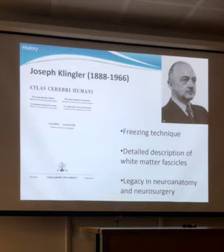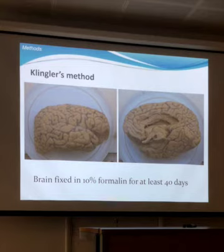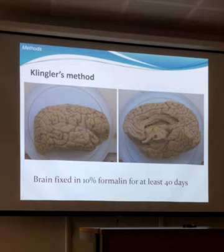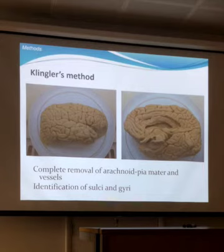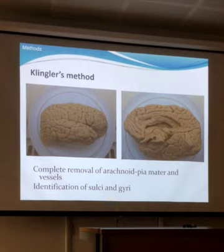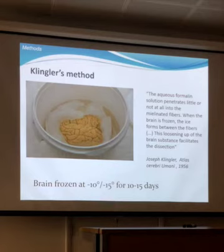How does the Klingler method work in practice? The first step — using specimens prepared in Newcastle where I did my PhD — is fixing the brain in a 10% formalin solution for a minimum of 40 days, though I usually keep them 2 to 3 months. The second step is to completely remove the arachnoid and pia mater along with all vessels, allowing identification of surface anatomy in terms of sulci and gyri. The crucial step is the freezing process: brains are kept in a refrigerator at minus 10 to 15 degrees for approximately two weeks.